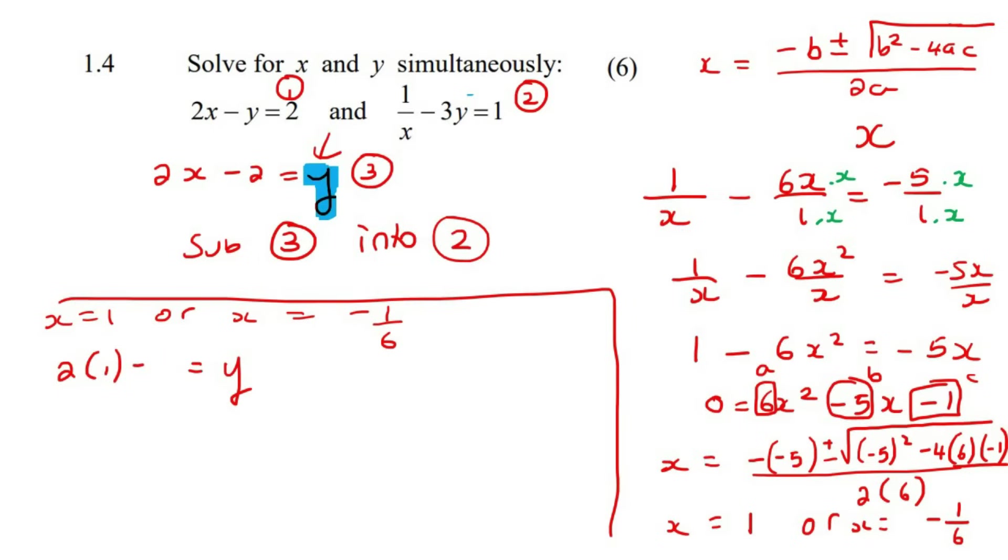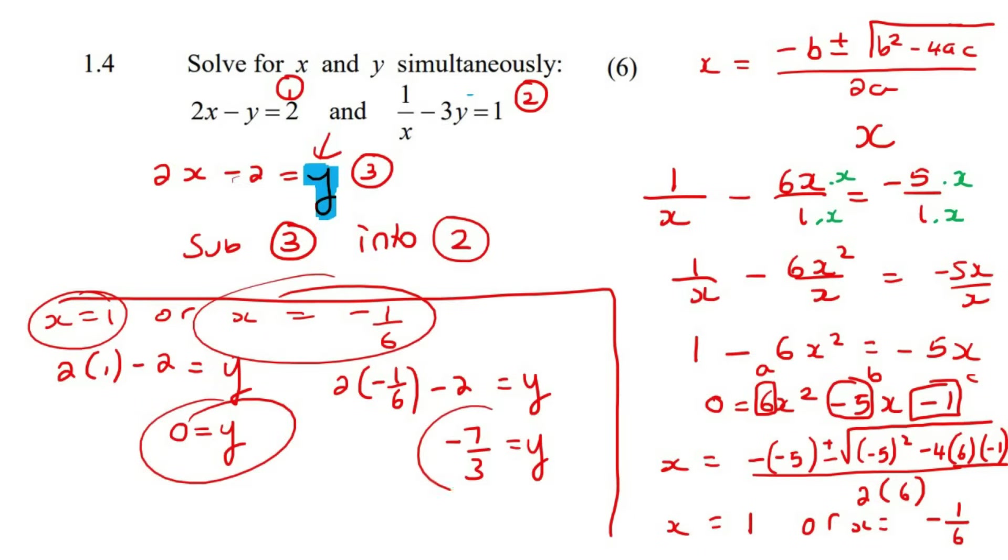So we could just say that Y is equal to 2 times 1 minus 2. My bad. 2 times 1 minus 2. You see what I did there? I just took that X value and I plugged it into there. Okay, so you would end up with Y equals to 2 minus 2, which is 0. And then for the second one, it's going to be 2 times negative 1 over 6 minus 2. So I just plugged it into there. And if you had to go do that, you end up with negative 7 over 3. And so there we have all of our answers. We've got the two X values. And we've got the two Y values.